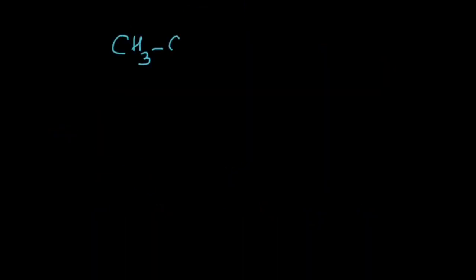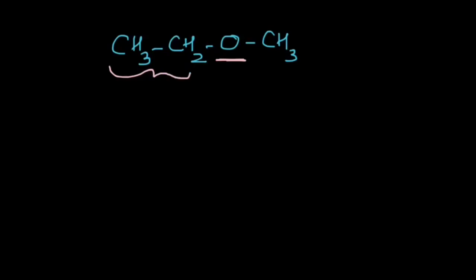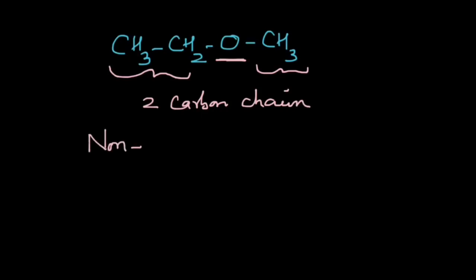So what are non-terminal functional groups? Let's take a look at this compound — it's an ether, and you can see that the functional group is present right over here, and we have carbon chains on both sides of the functional group. We have two carbon chains, one on each side, and that is what we call a non-terminal functional group.